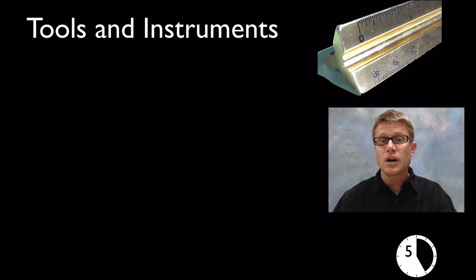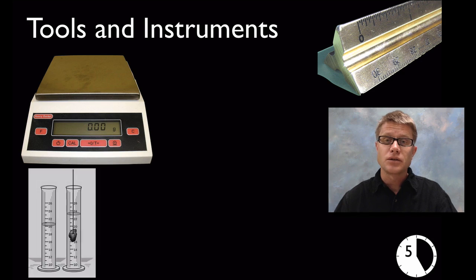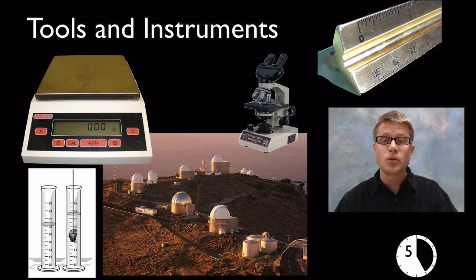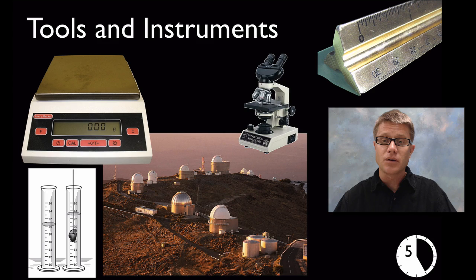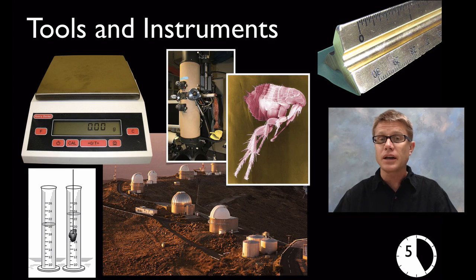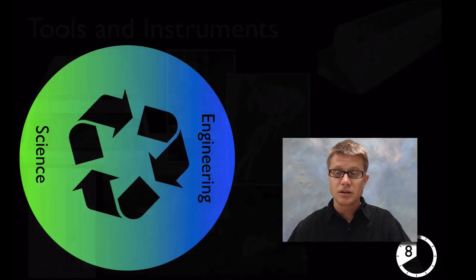As we move into the upper elementary grades we want to start talking about tools and instruments. A tool could be like a ruler, or a balance, or a graduated cylinder. They allow us to make more precise measurements and do better science. Telescopes, microscopes allow us to see things that are really far away or that are really close but incredibly small. And lots of times these new technologies allow us to make new scientific discoveries. And so eventually we created electron microscopes which eventually created better technology.